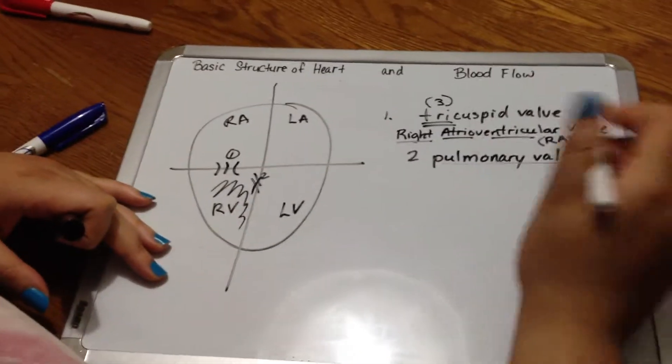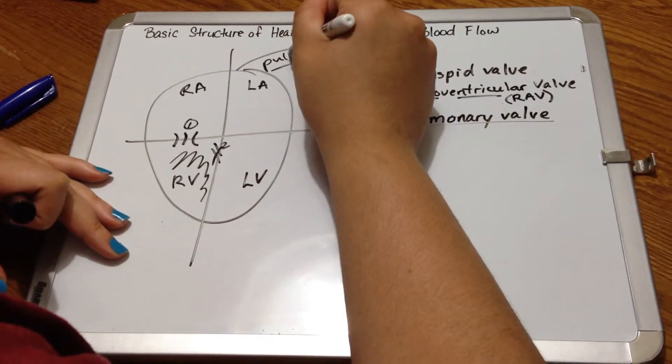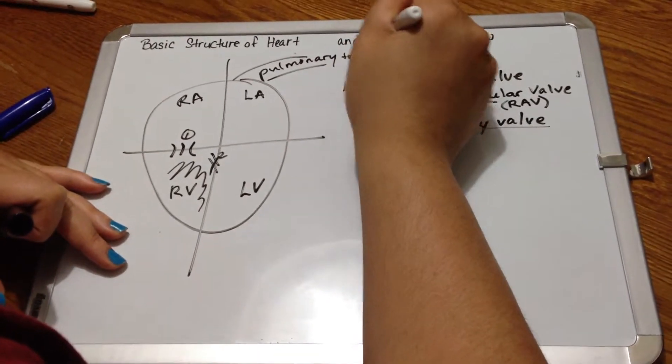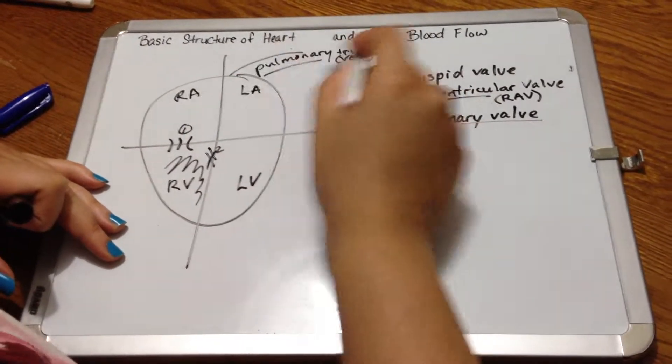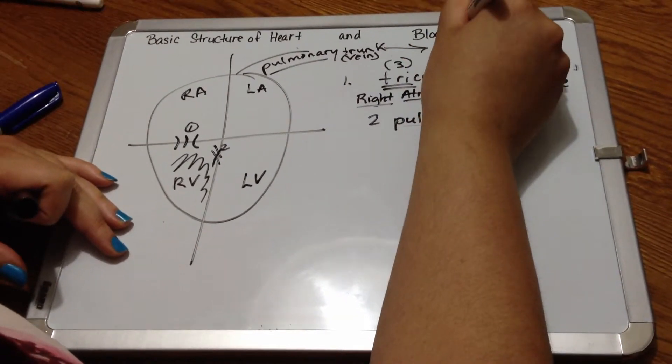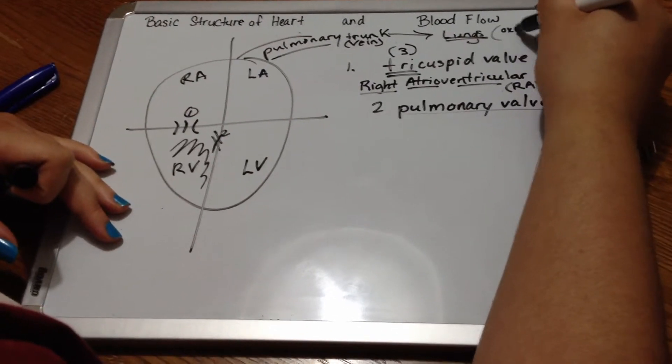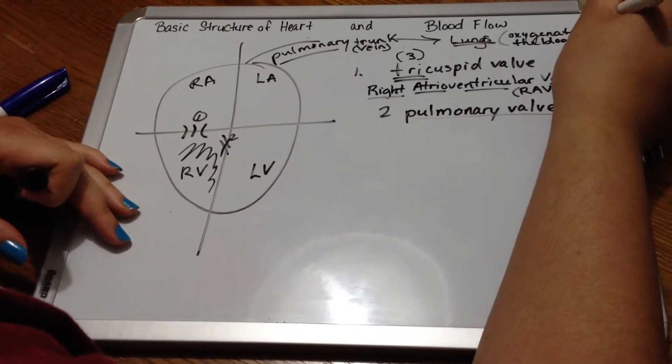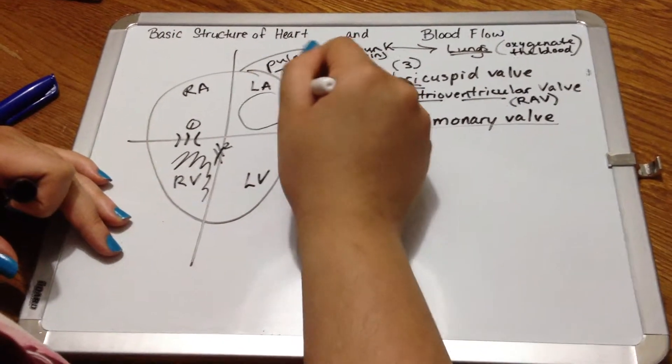The pulmonary valve has only one name. So the pulmonary valve is leading into the pulmonary trunk, also known as the pulmonary vein. Once you've gone through the pulmonary trunk, you actually end up in the lungs. So this ends up in the lungs, and the lungs do a fascinating thing. They actually oxygenate the blood.